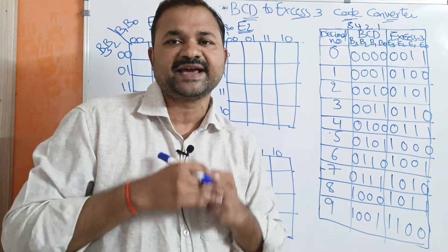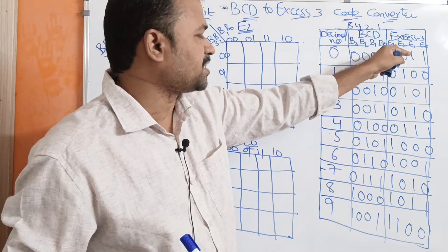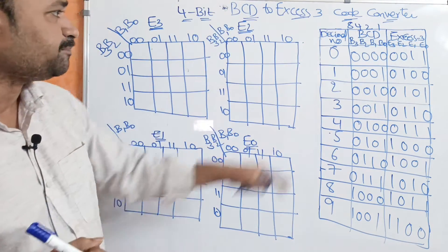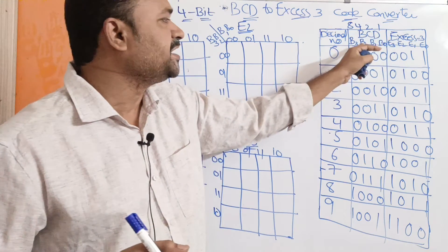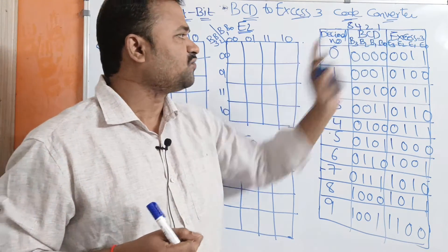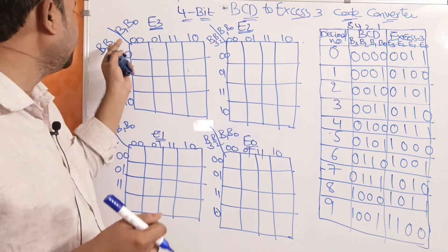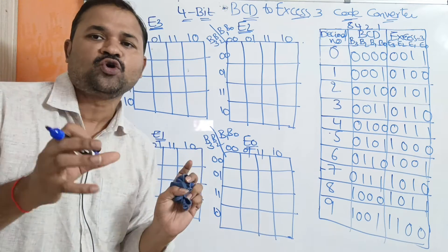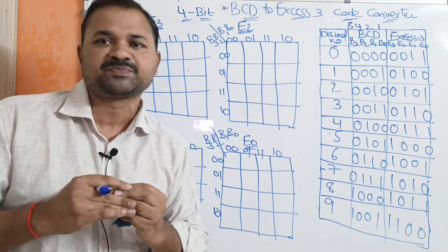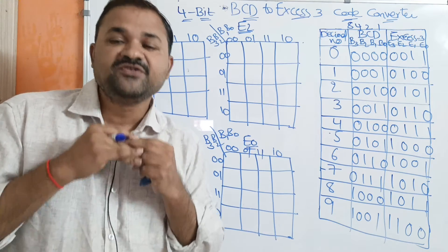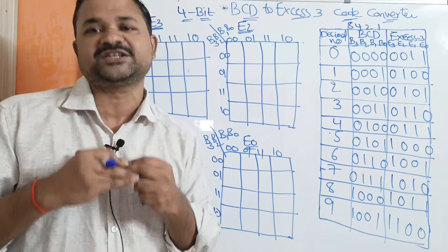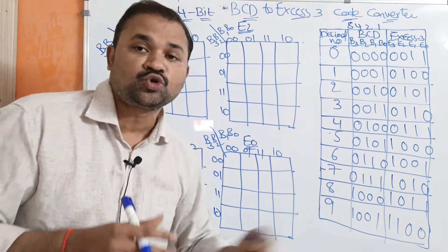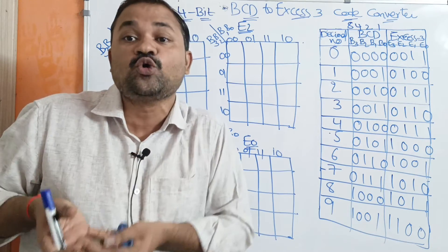Next we have to derive the expressions for output bits E3, E2, E1, and E0. We are using a 4-variable Karnaugh map with inputs B3, B2, B1, B0. A 4-variable K-map gives 2 to the power 4, that is 16 combinations. But BCD represents only 10 digits from 0 to 9.